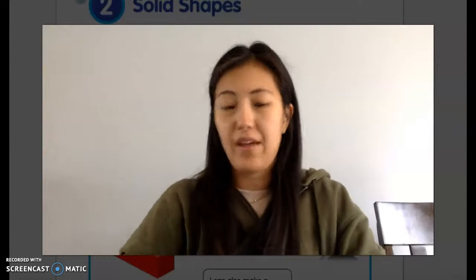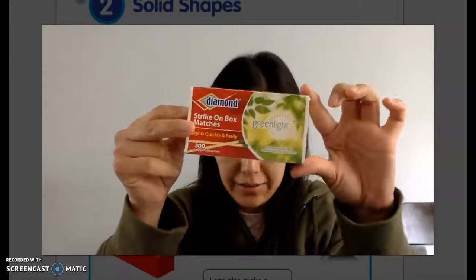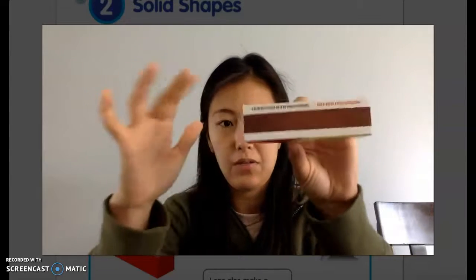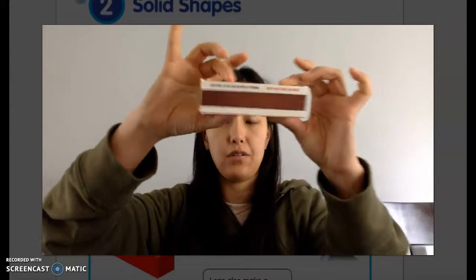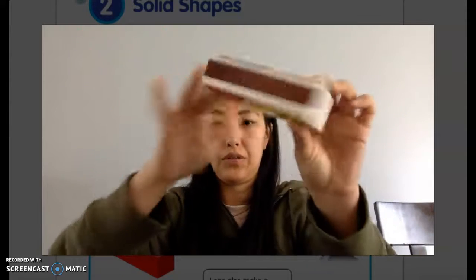We also have a rectangular prism. Here's Mrs. Beezus. It is a solid shape and you notice here my two top surfaces are longer compared to my end surfaces.